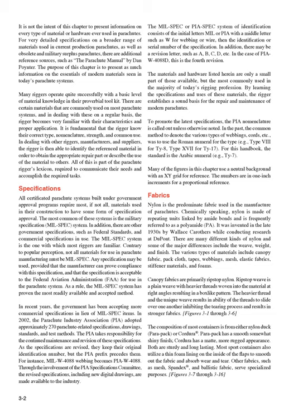In addition, there may be a revision letter, such as A, B, C, D, etc. In the case of PIA-W-4088D, this is the fourth revision. The materials and hardware listed herein are only a small part of those available, but the most commonly used in the majority of today's rigging profession. By learning the specifications and uses of these materials, the rigger establishes a sound basis for the repair and maintenance of modern parachutes. To promote the latest specifications, the PIA nomenclature is called out unless otherwise noted.